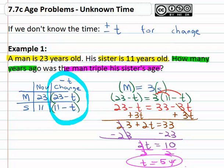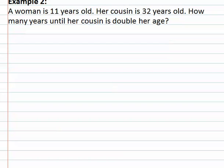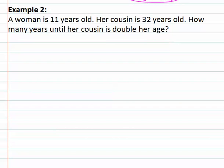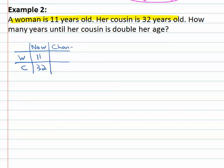Let's try another example where we have some unknown time for the change. Here a woman is eleven years old, her cousin is thirty-two years old, how many years until her cousin is double her age? We've got a woman and her cousin. And right now we are told that the woman is eleven, the cousin is thirty-two.